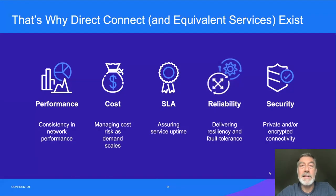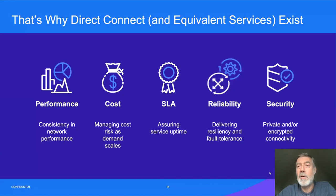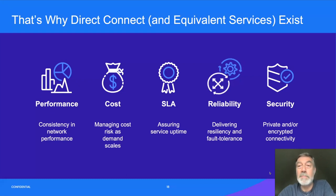That's why cloud providers actually offer Direct Connect or equivalent services: it's performance and the consistency of your performance first. The second reason is cost. At a certain point, particularly if you're egressing data out of a public cloud, it makes sense to move to a private connection. VPN egress data charges can be four to five times greater than private network egress data charges. So at a certain point — and it's not a very high amount of utilization — it makes sense to switch over to private for cost reasons.